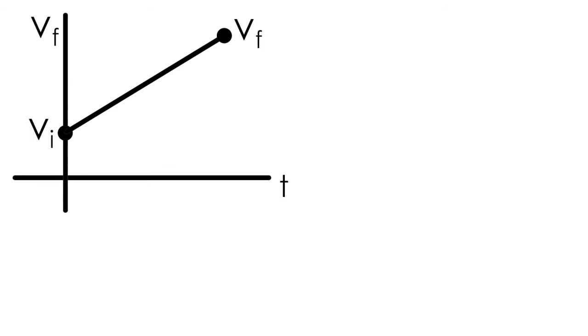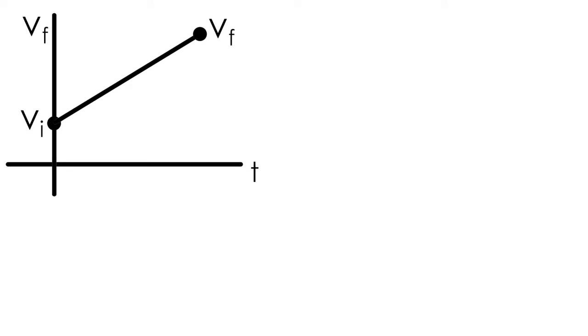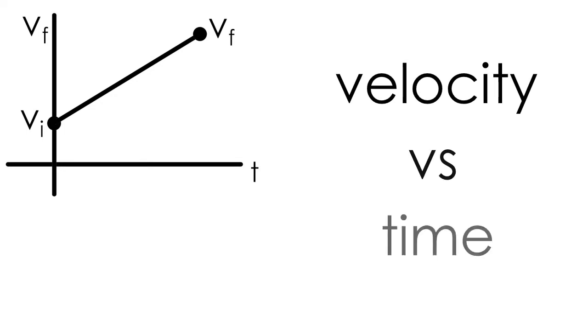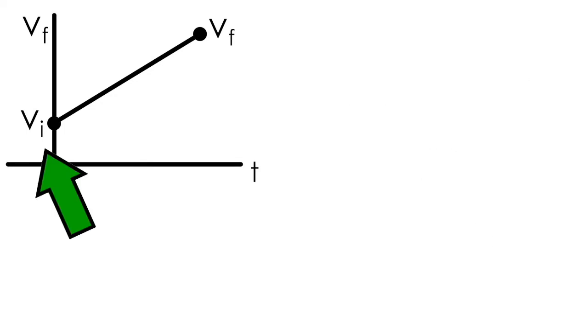So we're going to analyze this graph to write an equation that relates a few variables. At the end of all of this, we want an equation that will predict the velocity of our object at any point in time. It makes sense that we'll have vi, vf, and t in our equation, since these are the parameters that are displayed on our graph.